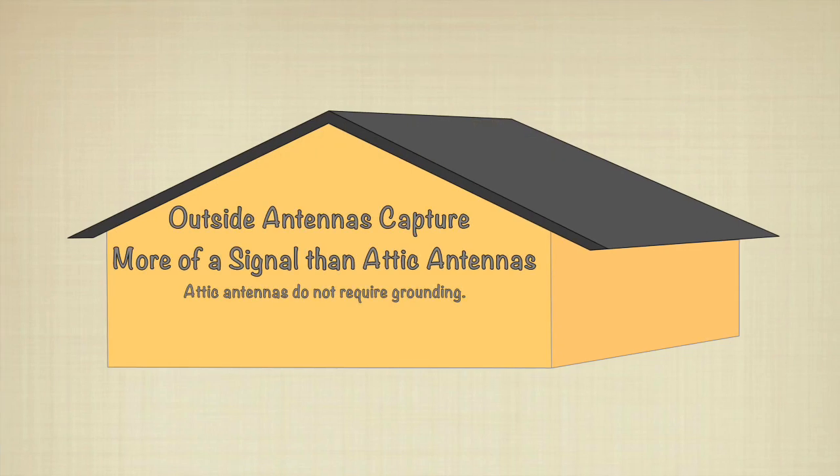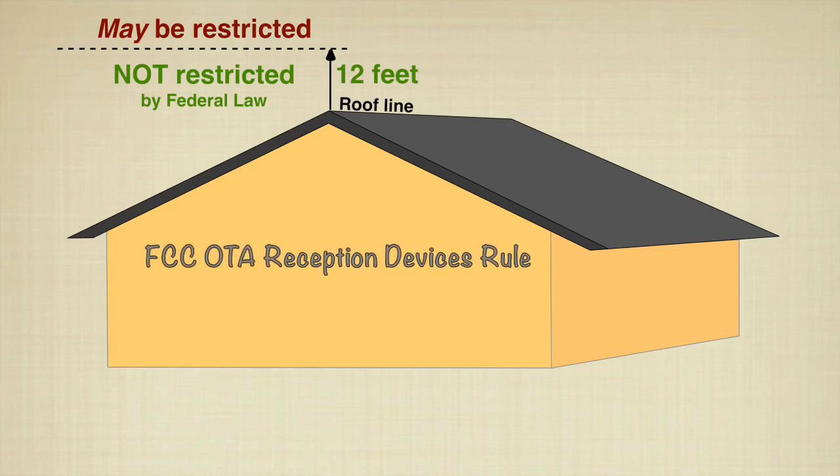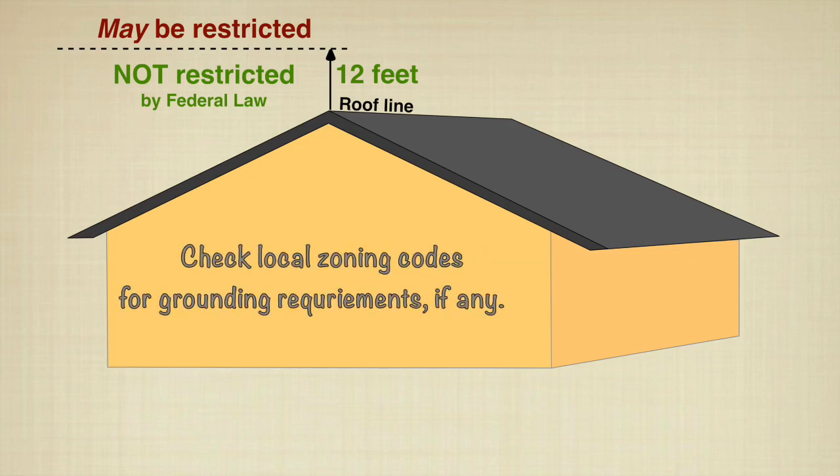Neighborhood associations, governments, and other entities cannot restrict or impair outside TV antenna installations less than 12 feet above the roofline. However, many localities have zoning codes for antenna grounding, usually based on the National Electrical Code.